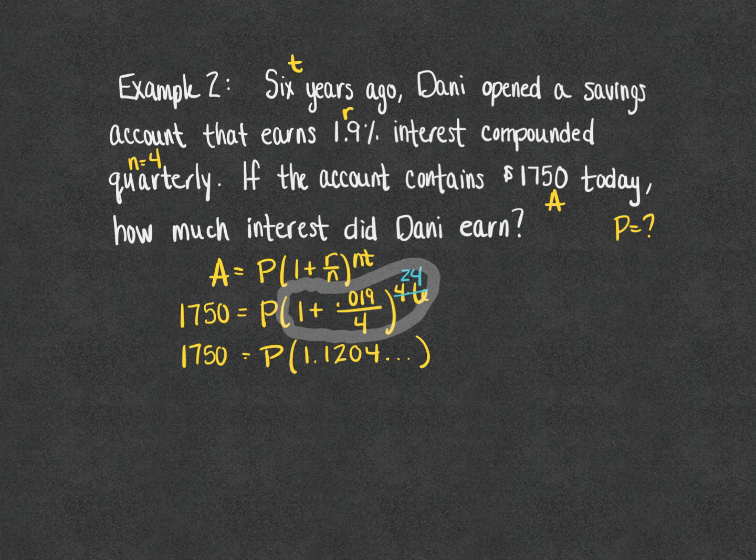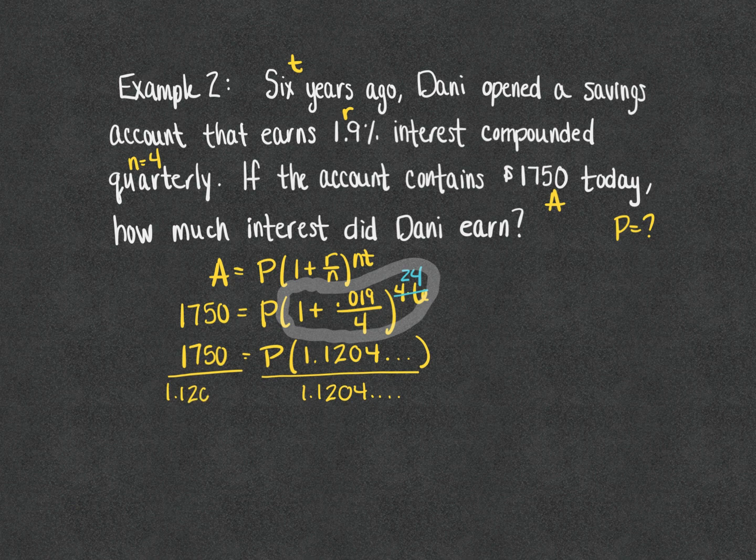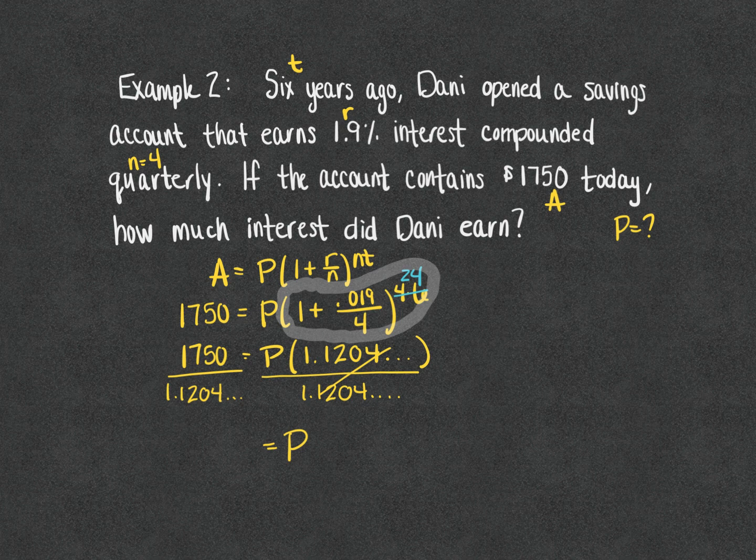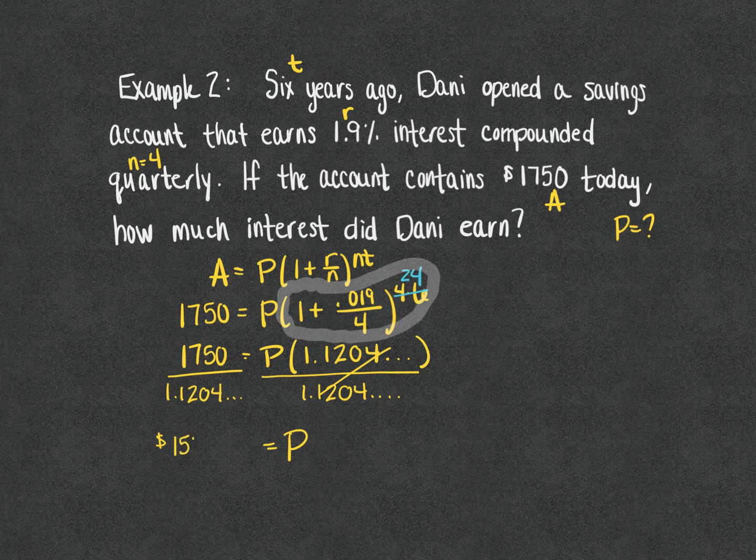However, what I am going to do whenever I divide to solve for P, I am going to use every one of those decimals, because you cannot round in the middle of a calculation. I'm using the dot dot dot to save me a little bit of writing. Then I'm going to do 1750 divided by that long answer including the other four decimal places that I did not write down, and we will find the principal is $1,561.87.